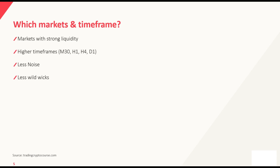So which markets and timeframes do we normally look at? One of the best ways to use Fibonacci extension is on markets with strong liquidity — meaning we're looking at major pairs like euro-dollar, pound-dollar, Aussie dollar — basically dollar-denominated pairs. These are pairs that have more people trading on them, so when there's a higher trading volume, it is a lot more liquid.